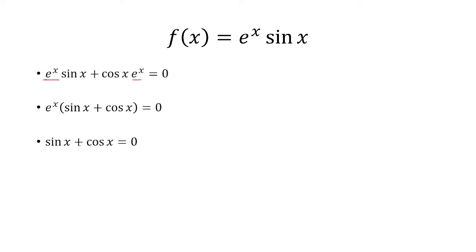And so I'm going to set sine of x plus cosine of x equal to 0, which means sine equals negative cosine. So we're looking at when is sine equal to negative cosine. Well, for that, I'm going to draw the unit circle.